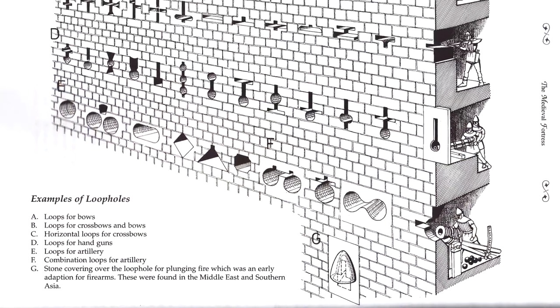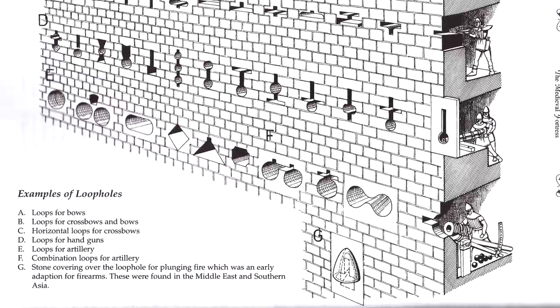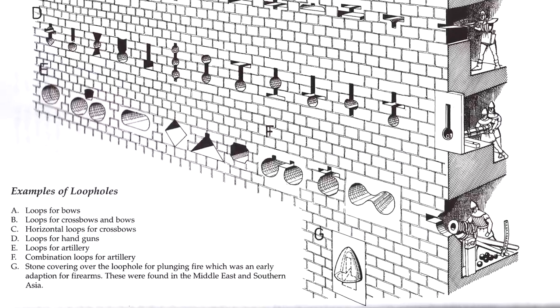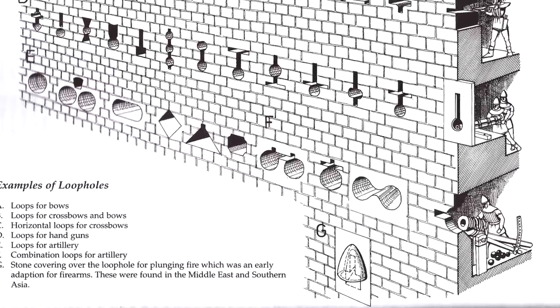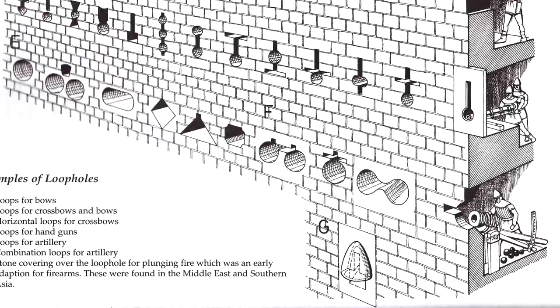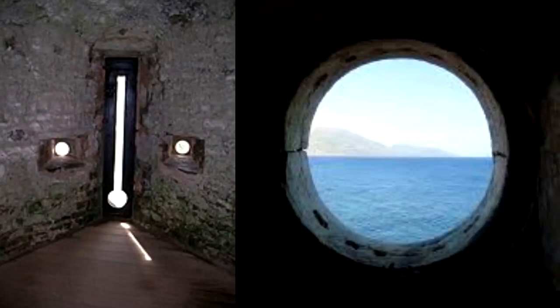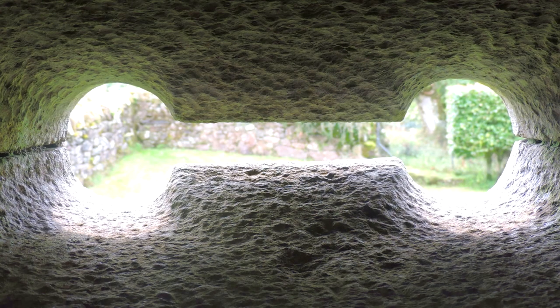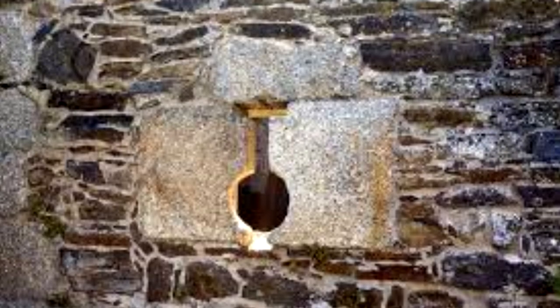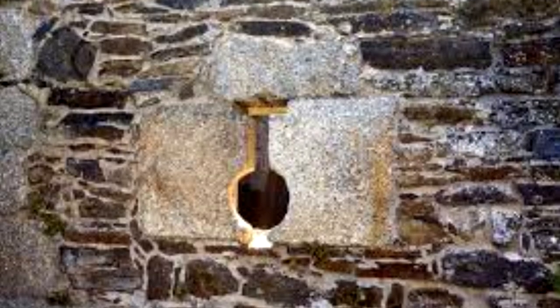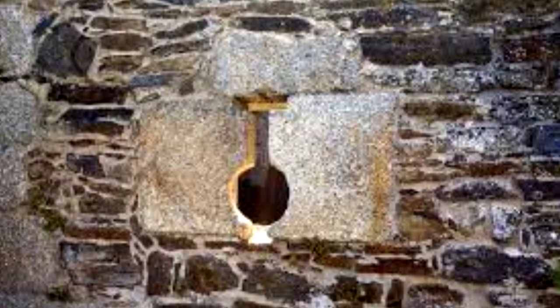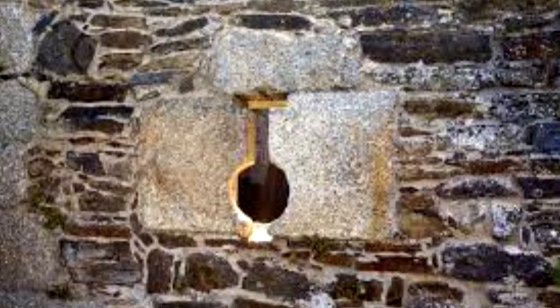When firearms and cannons became common in the late medieval and Renaissance periods, fortifications had to adapt their arrow slits to accommodate these. These types of holes are known as loopholes or cannoneers, which were used to fire guns or cannons through. To prevent detection, the rifle's muzzle should not protrude through the loophole — particularly at night — as the rifle should be fired within the wall to hide the muzzle flash.